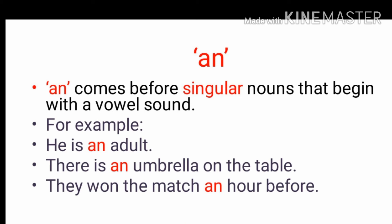Where we can use an: an comes before singular nouns that begin with a vowel sound. So an is also used with singular nouns, but be careful — it is used with words which give a vowel sound. For example: he is an adult, there is an umbrella on the table, they won the match and are before. Here adult, umbrella, and are all begin with a vowel sound, that is why we have used an.